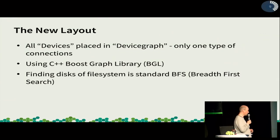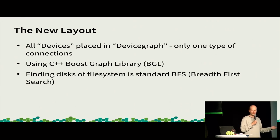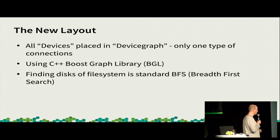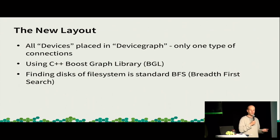So, this is the new layout. The basic idea is we place all the devices in a standard graph — which when you look at these pictures you immediately think: yes, this is a graph. Maybe it's just a tree, but in some cases it's also a graph. There's only one type of connection in the graph, and whether you have a file system underneath a RAID or on a disk directly, it doesn't matter. We use the C++ Boost Graph library, and finding the disk of a file system is a standard breadth-first search, which the library provides in five lines of code, not a few hundred.